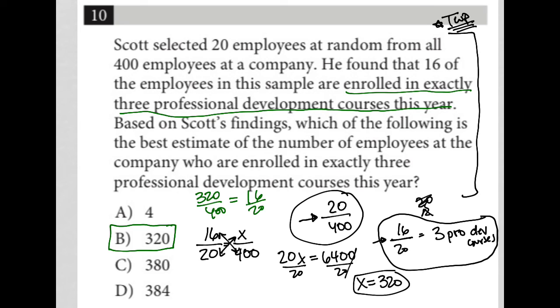Another way to solve it would be to find a percentage. We could say 16 out of 20 is equal to 0.8, which is the same as 80%. So I can then say, if 80% of the 20 people selected were in these three courses, then my expectation is that also 80% of the entire group. So I'd just do 0.8 times 400, and that would also give me 320. So that's another way to approach this question as well.